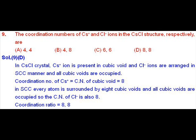And chloride ions are surrounded by 8 cesiums, as every corner is surrounded by 8 centers. And at the center, cesium ion is present. So the coordination number of chloride ions is also 8.